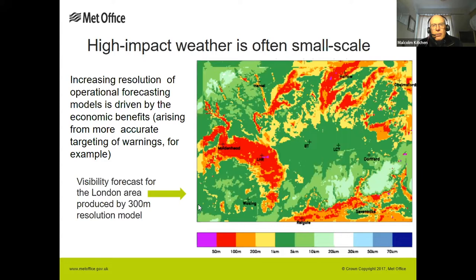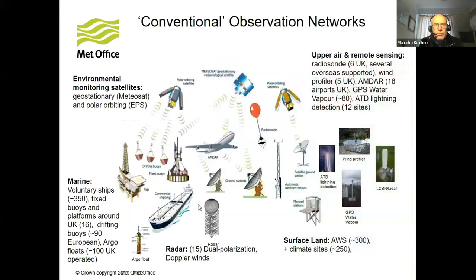As things stand, I couldn't produce a map like that based on observational evidence, because we just don't have the number of observations of visibility necessary to construct it.